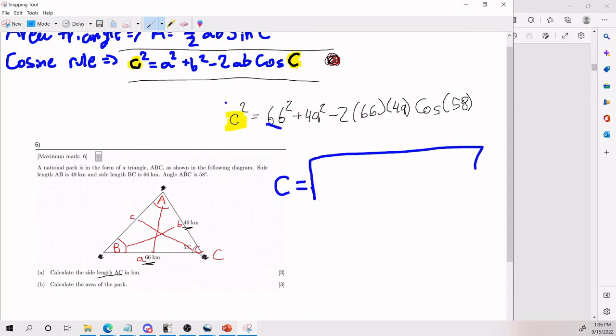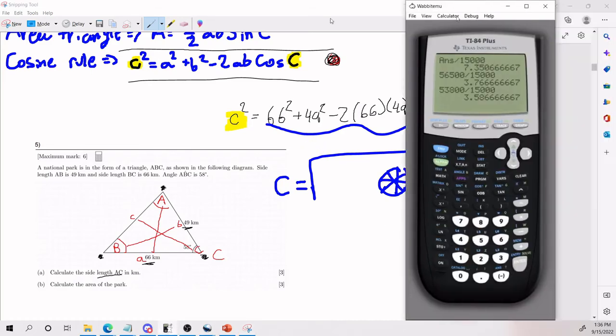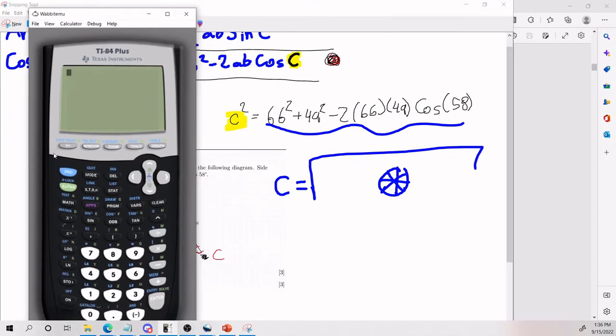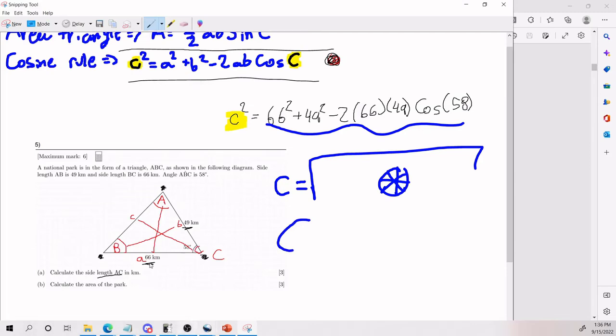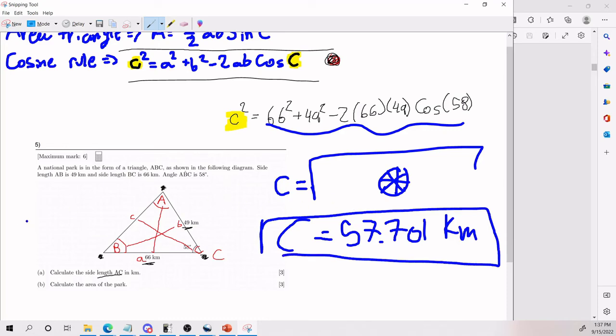Now I'm going to plug in all of this into my calculator. I'm going to end up with C equals square roots of this whole guy. And it's going to take me a second, but here it is in the calculator. 57.701. Now this is length, so I'm going to put the units as well, kilometers. Alright, cool. That is part A.